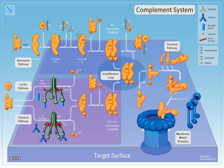The complement system is a part of the immune system that enhances the ability of antibodies and phagocytic cells to clear microbes and damaged cells from an organism, promotes inflammation, and attacks the pathogen cell membrane. It is part of the innate immune system.